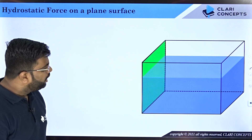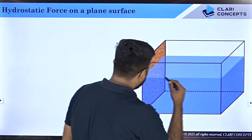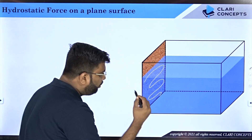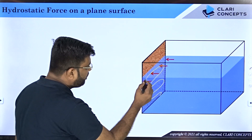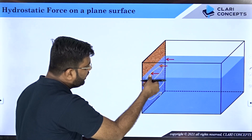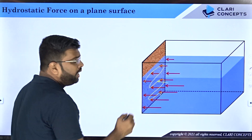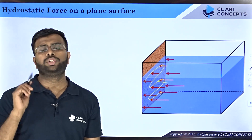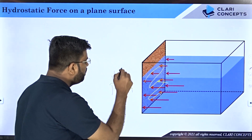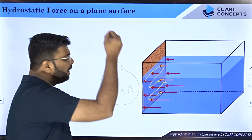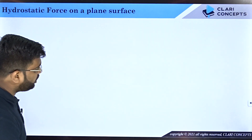Now if I ask what is the total force applied by the water on the vertical wall, the vertical wall no longer has the same pressure at all points. As you move down, pressure is constantly increasing — pressure at the upper layer is smaller and keeps increasing downward. If you want to calculate force, you'd say force equals pressure times area, but which pressure do you consider when pressure is different at each point? We need to derive an equation for this case.